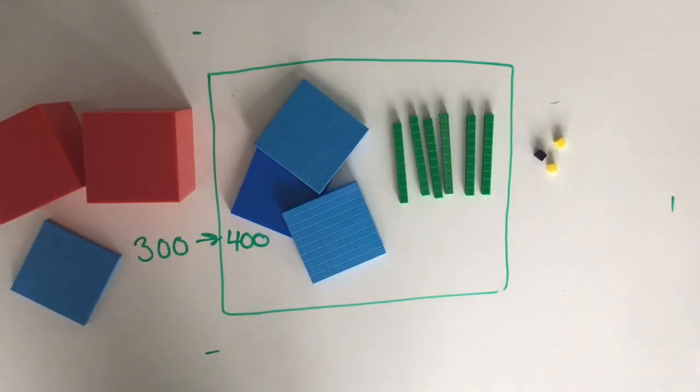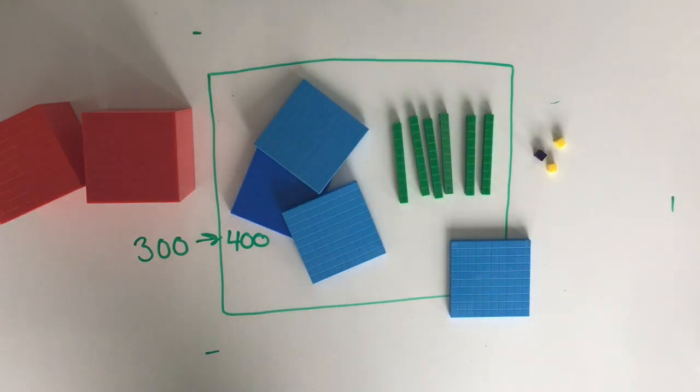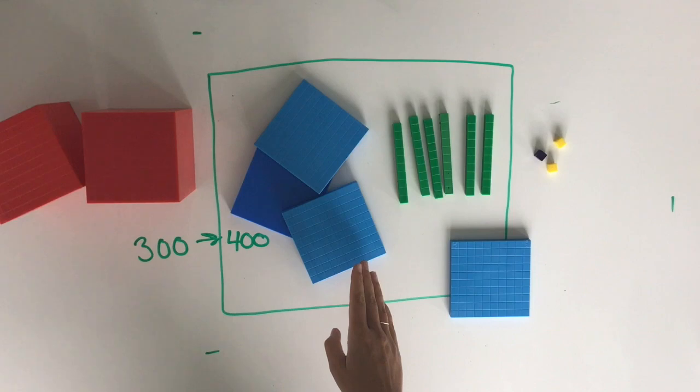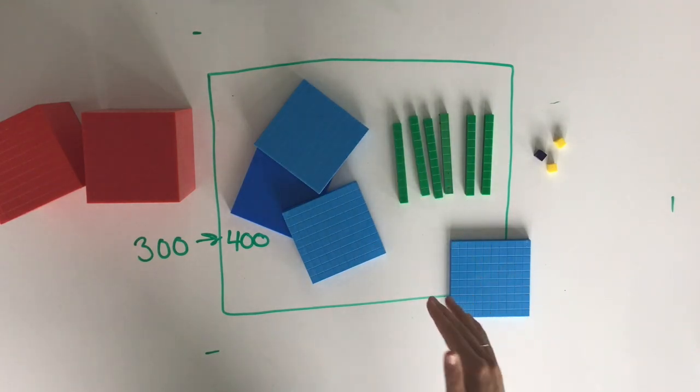Now it's time to compare how many tens we have against our hundred. The same rule applies as when we're rounding with tens. However, this time, because we're looking at the hundreds, if we have 50 or more, we round up. 40 or less, we round down.